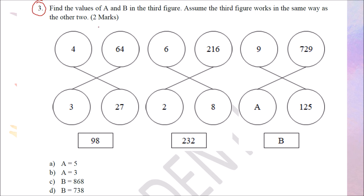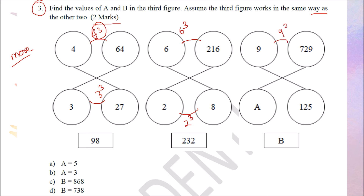Question 3 is a 2-mark question: find the values of A and B in the third figure, assuming it works the same way as the other two. This section is where you can attempt more questions and gain more marks. Looking at the figures: 4 and 64 — since 4 cubed is 64; 3 and 27 — since 3 cubed is 27; 6 cubed is 216; 2 cubed is 8. What cubed gives 125? That is 5 cubed, so A equals 5. Option A is correct.